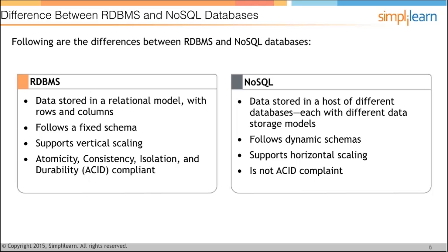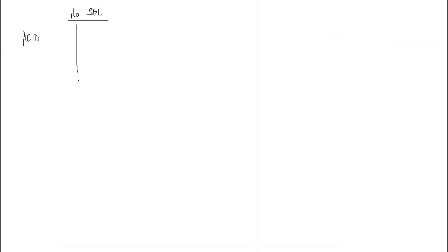D stands for Durability — in case any failure happens, the system should be able to perform a rollback. All RDBMS — SQL Server, MySQL, Oracle — must follow ACID properties. When we talk of NoSQL, it is not ACID compliant. If RDBMS has ACID, NoSQL has the completely opposite, which is BASE.